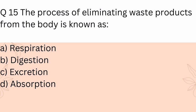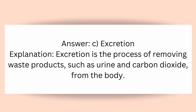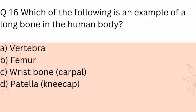Question 15: The process of eliminating waste products from the body is known as? A) Respiration, B) Digestion, C) Excretion, D) Absorption. Answer: C) Excretion. Explanation: Excretion is the process of removing waste products such as urine and carbon dioxide from the body.